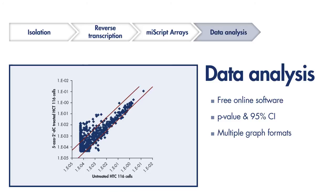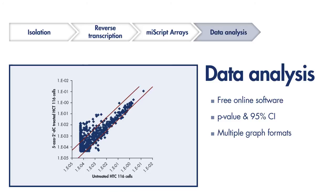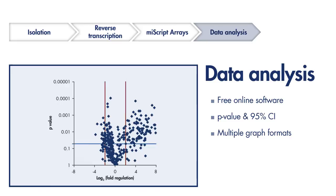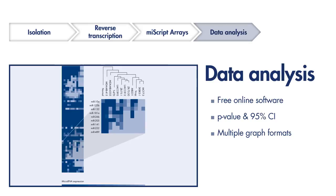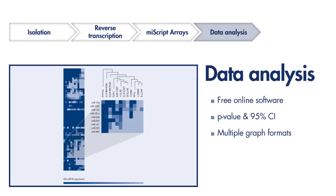The final step in any experiment is data analysis. Step 4 of the miScript PCR array process is to take the raw data from your favorite real-time PCR instrument and upload it into our online data analysis software. The benefit of profiling multiple microRNAs using the miScript system is that you'll find answers the first time and every time, allowing you to unlock the full potential of even traditionally difficult FFPE or serum samples.